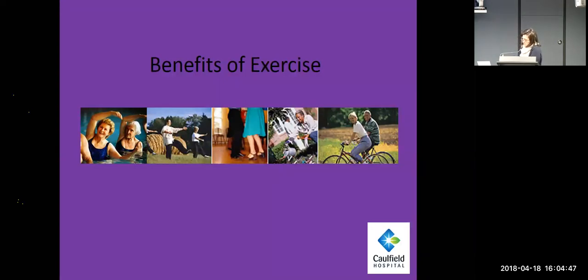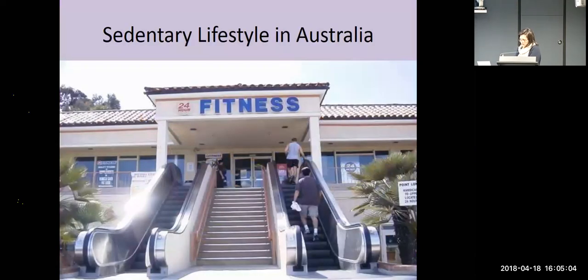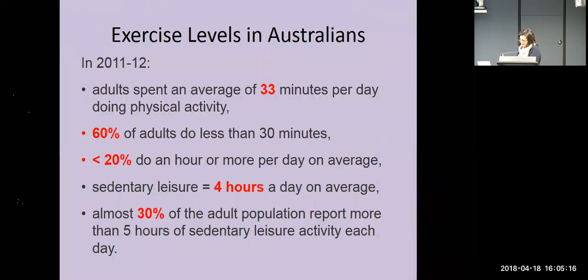Let's spend a few minutes on the specific benefits of exercise. Before talking about that, let's consider why not exercising is not a good thing. How well are Australians exercising? The average is about half an hour a day of physical activity — including walking to the bus or activity around the home. About 60% of adults do less than 30 minutes a day, and less than 20% are doing more than an hour on average. In terms of sedentary leisure, the average is about four hours a day, and about 30% of Australian adults spend more than five hours of sedentary leisure each day.